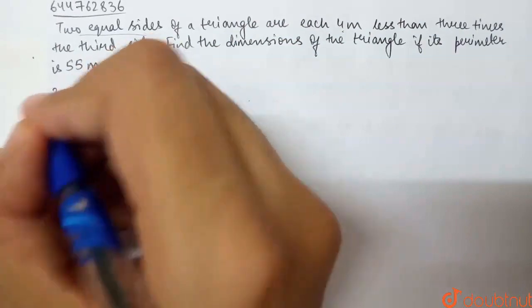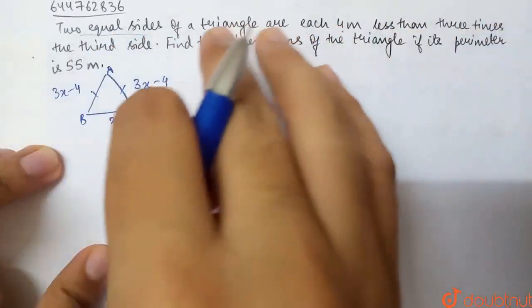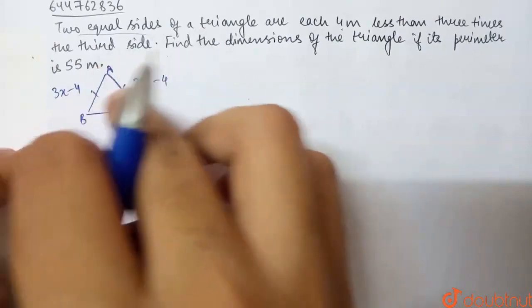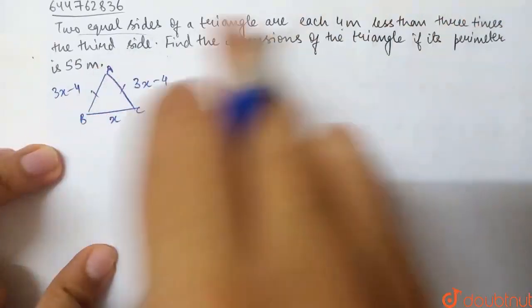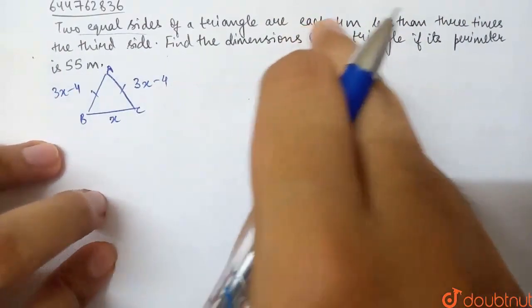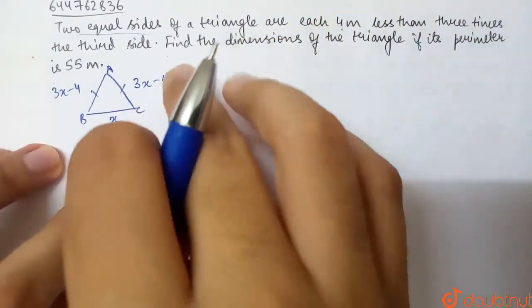Similarly, AB is also 3x minus 4. Hence, the sides that are equal in length will be 3x minus 4. That is, 3 times the third side minus 4. Each of them is 4 meters less than 3 times the third side.